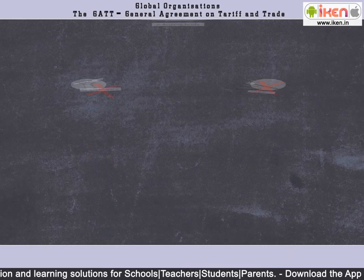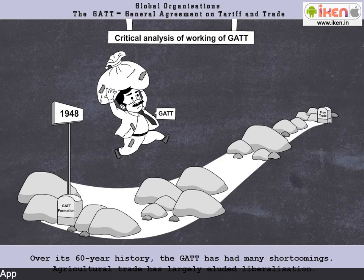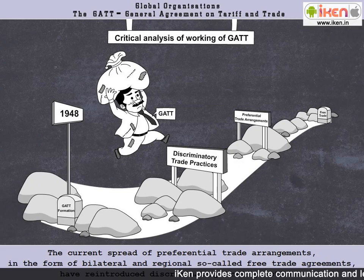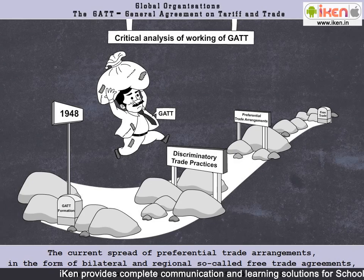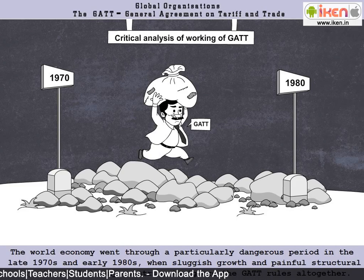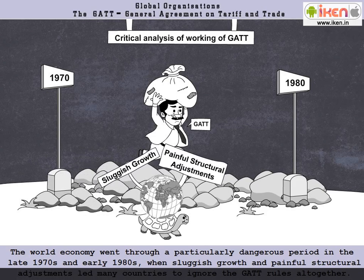Critical analysis of the working of GATT. Let us take a quick look at the working of GATT over a span of six decades. Over its six-decade history, the GATT has had many shortcomings. Agricultural trade has largely eluded liberalization. The current spread of preferential trade arrangements in the form of bilateral and regional, so-called free trade agreements, have reintroduced discriminatory trade practices. The world economy went through a particularly dangerous period in the late 1970s and early 1980s when sluggish growth and painful structural adjustments led many countries to ignore the GATT rules altogether.